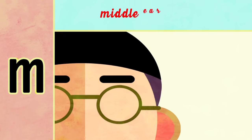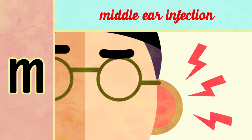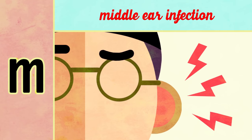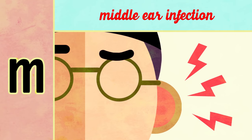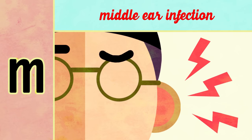M is for middle ear infection. DNS also predisposes to middle ear infection because the Eustachian tube, which is the only drainage source of the middle ear, opens in the nasopharynx, and DNS can cause its obstruction, resulting in middle ear infections.